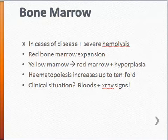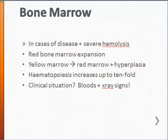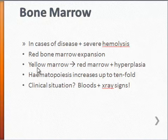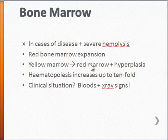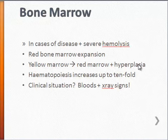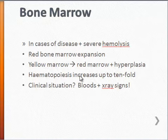The interesting thing about bone marrow is that it's very adaptive. In cases of disease and severe hemolysis, when we're losing a lot of cells — a lot of cells are being destroyed in the system — we're going to need more cells to be produced. The bone marrow is able to become more active through what we call red bone marrow expansion. Yellow bone marrow, which is inactive, has the ability to become active when needed. The yellow marrow transforms into red marrow, with hyperplasia, increased vascularity, and becomes densely populated with cells. Hematopoiesis is able to increase up to 10 times as much as in a normal state.